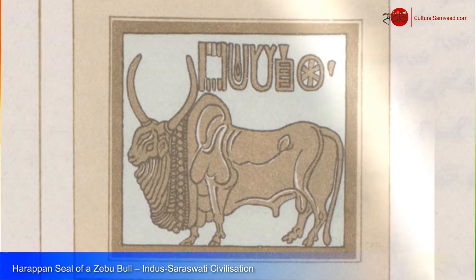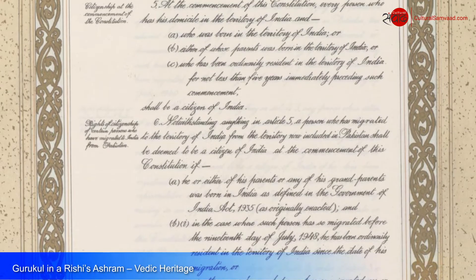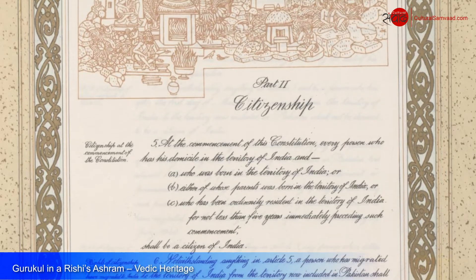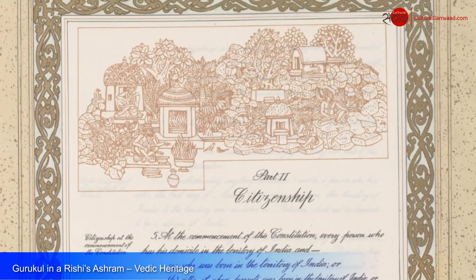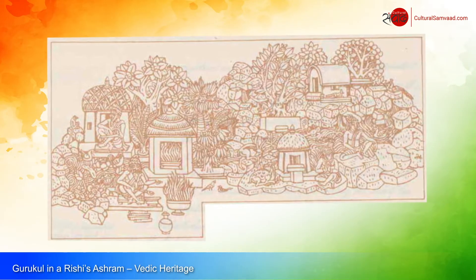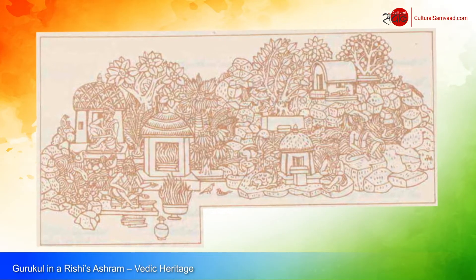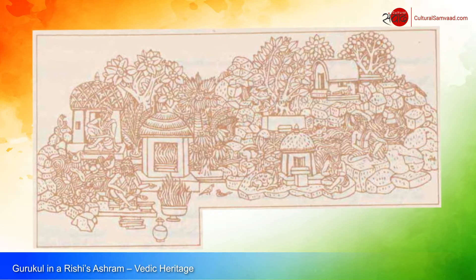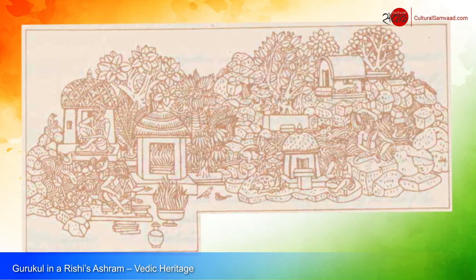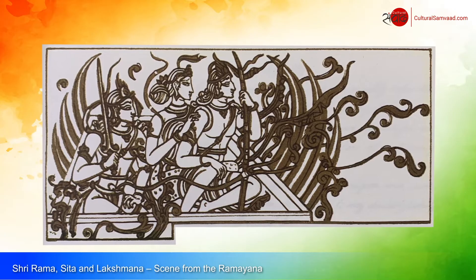Part 2 of the Constitution, which deals with citizenship, is decorated with an evocative illustration of a gurukul in a Rishi's ashram — that hallowed portal of learning whose origins can be traced back to the Vedas.